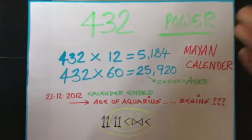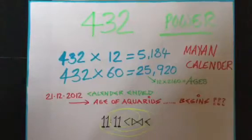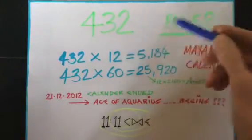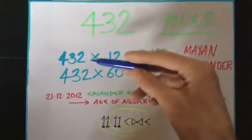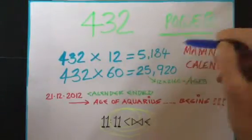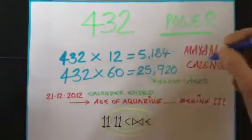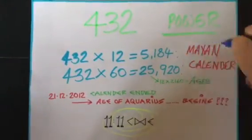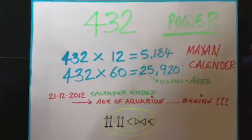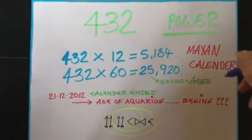So anyway, 432, we use 12 and 60 max. If you do 432 times 12, you get that sum there. It's what the Mayan gave us. And 432 times 60 gives you that sum. The other one, 25,920, is the universal cycle—everything in the universe goes around, and that's how long it will take.